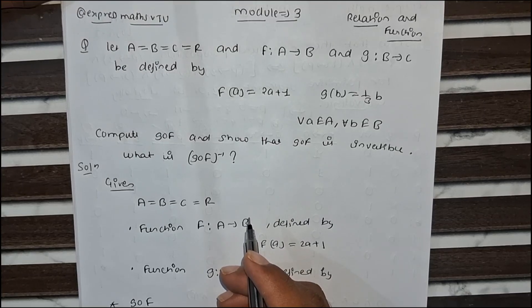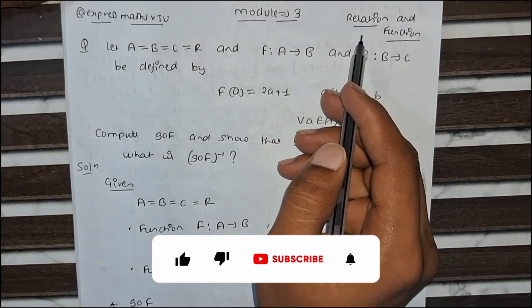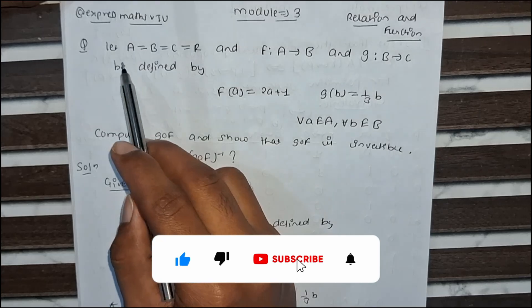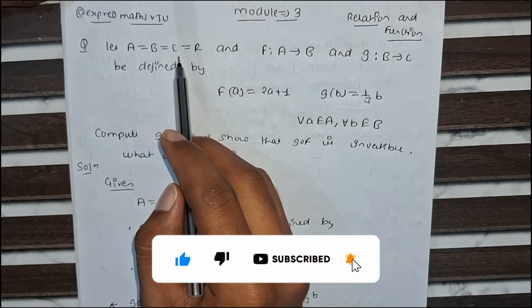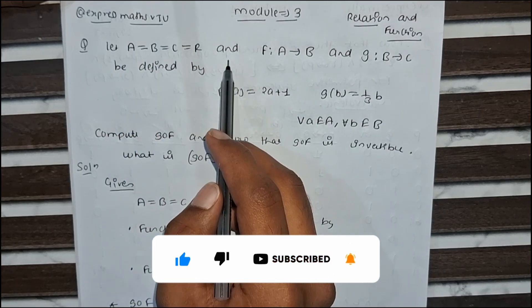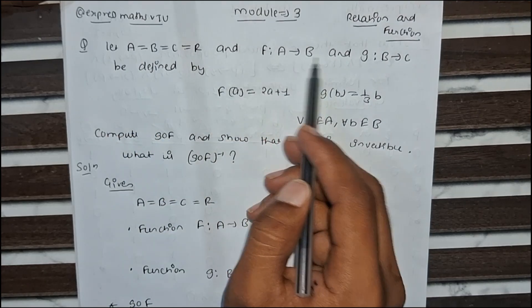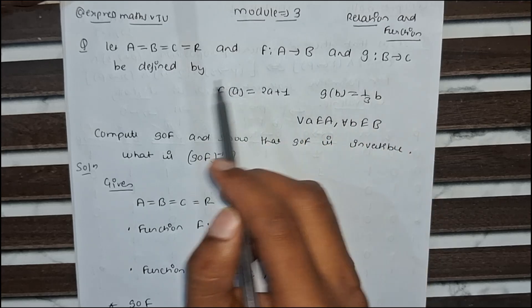Hello everyone. Today we are going to solve another important problem from module 3, Relations and Functions. The question is: let A equals B equals C equals R, with function f from A to B and function g from B to C.